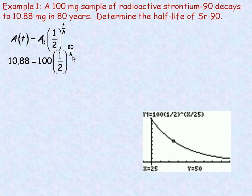Now, I want to solve for h, and h is in the exponent. So I'm going to use a logarithm. But before I can convert this to log form, I have to get rid of the 100 so I just have the power on this side, not multiplied by 100. So I'm going to divide both sides by 100. On the right side we're left with just one-half to the 80 over h. 10.88 divided by 100 is 0.1088.